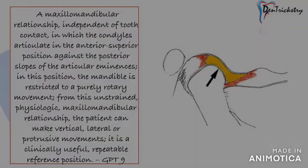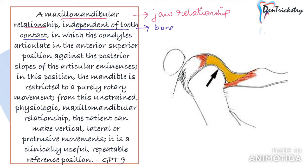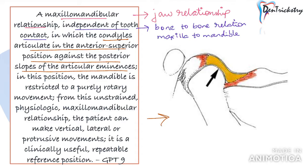That was complicated, so let us break it down for easier understanding. A maxillomandibular relationship — or your jaw relationship — is independent of tooth contact. This is very important. Centric relation is a bone-to-bone relationship, that is mandible to maxilla, which is not dependent on your teeth. That means it doesn't matter if the teeth are present or not.